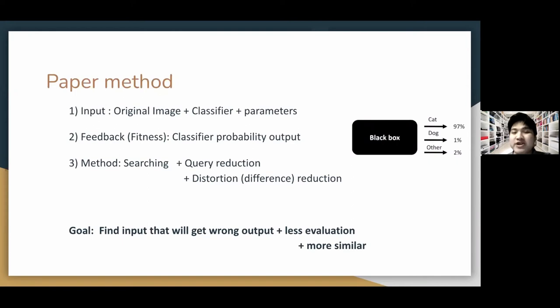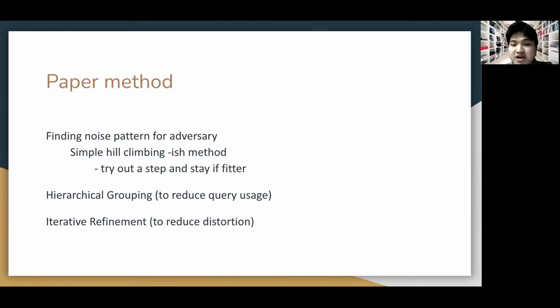And as the name already implies we will use a searching method assisted with query reduction and distortion reduction. Basically DeepSearch aims to find the noise pattern for adversary and it does by hill climbing method on each pixel RGB value. It takes a step forward and stays if the point is closer to the decision boundary else it moves backward.